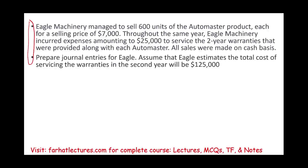Let's take a look at this example. Eagle Machinery sold 600 units of the AutoMaster product, each for $7,000. Throughout the year of sale, Eagle incurred expenses amounting to $25,000 to service the two-year warranties provided along with each AutoMaster. So when they make the sale, they also offer a two-year warranty — it comes with the sale. All sales were made on a cash basis. We need to prepare the journal entries. Assume Eagle estimates the total cost of servicing the warranty in the second year will be $125,000.